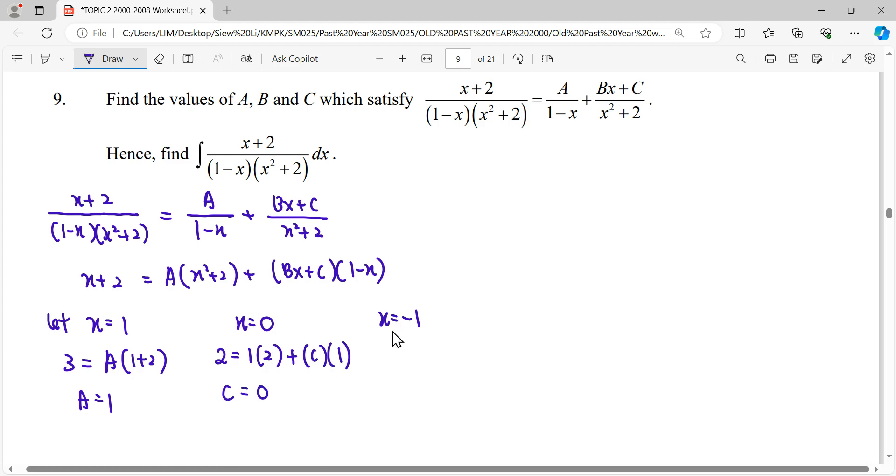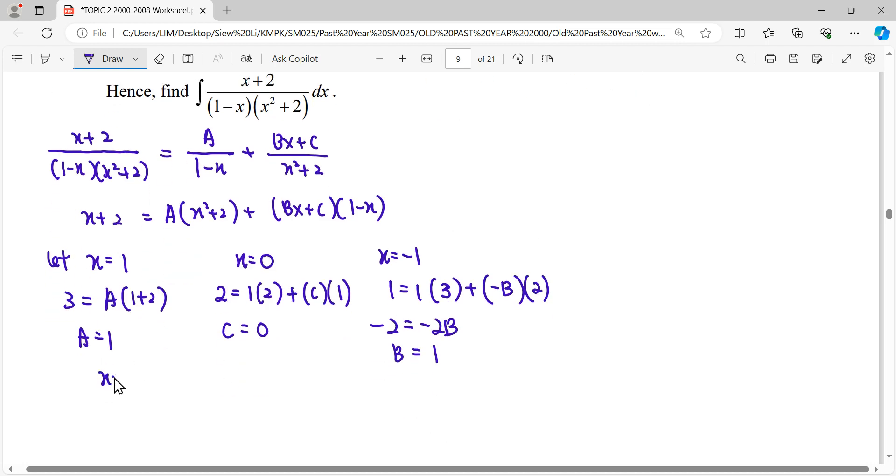Then lastly when x equals to negative 1, A is 1, negative B plus C. Then negative negative becomes positive. So B we can get 1. Finally we express our partial fraction.